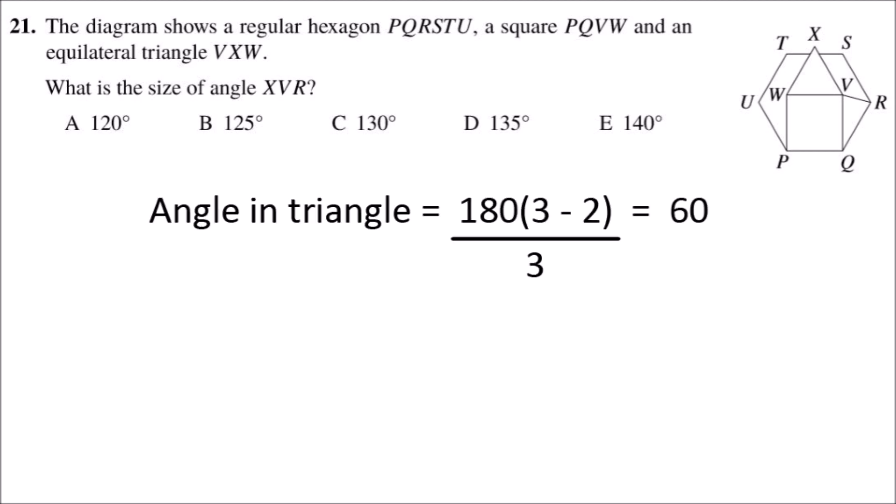If we start by finding the angle in the triangle, that's going to be 180 divided by 3, so that's 60 degrees.